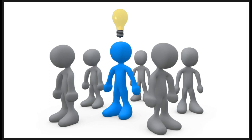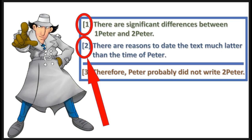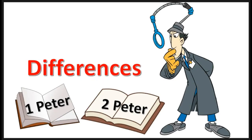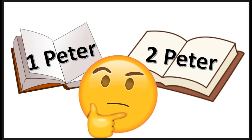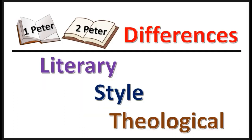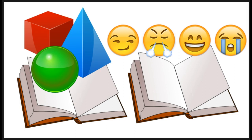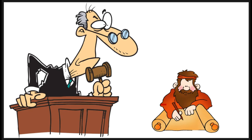Now that you have a basic overview, let's go into more details. The argument is based on two premises — differences and date, the double Ds. Let's look at the first premise, the differences. They will say the differences between 1 Peter and 2 Peter include literary differences, stylistic differences, and theological differences. The response to this is, of course there are going to be differences when there's a variation in subject matter and mood between the two letters. And the amount of Peter's writings is small, too small to form a solid judgment about his style.